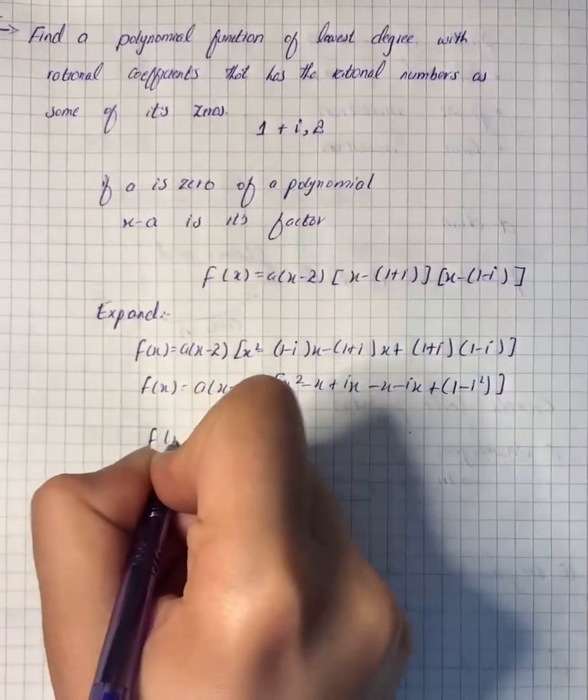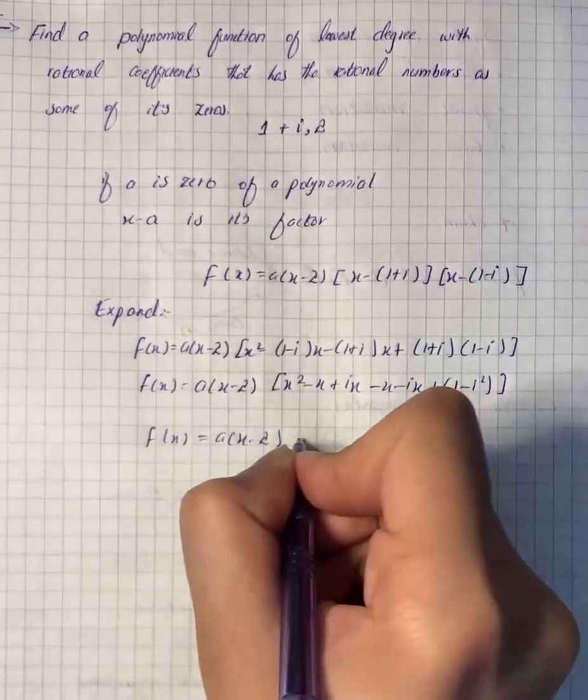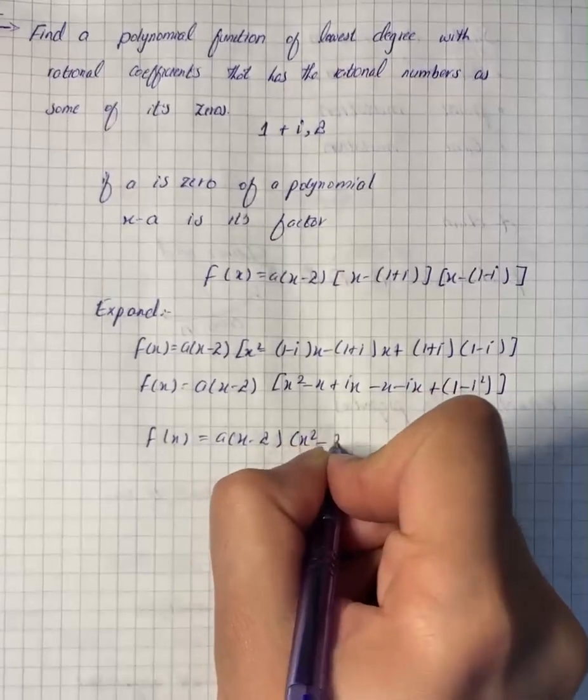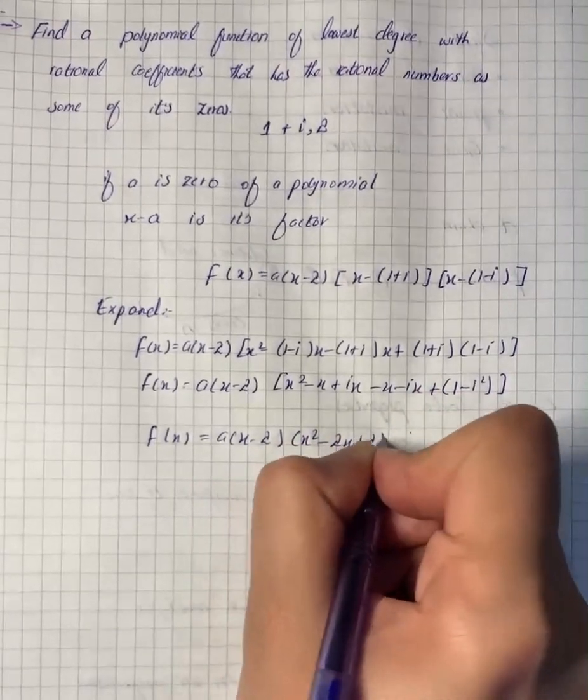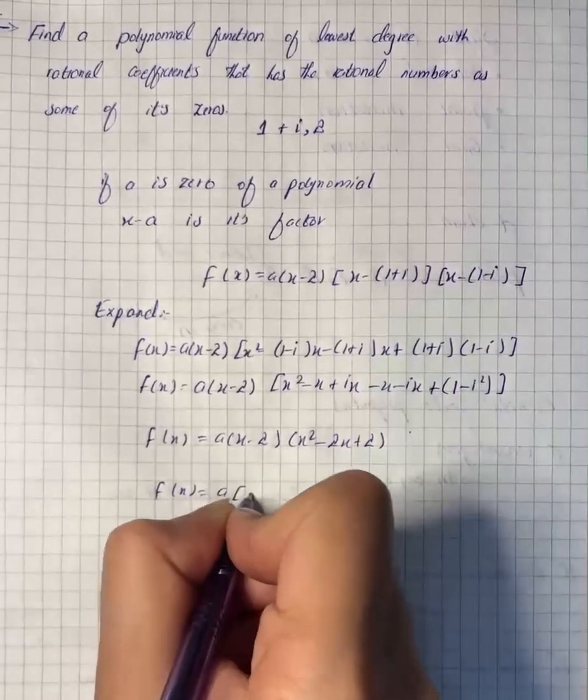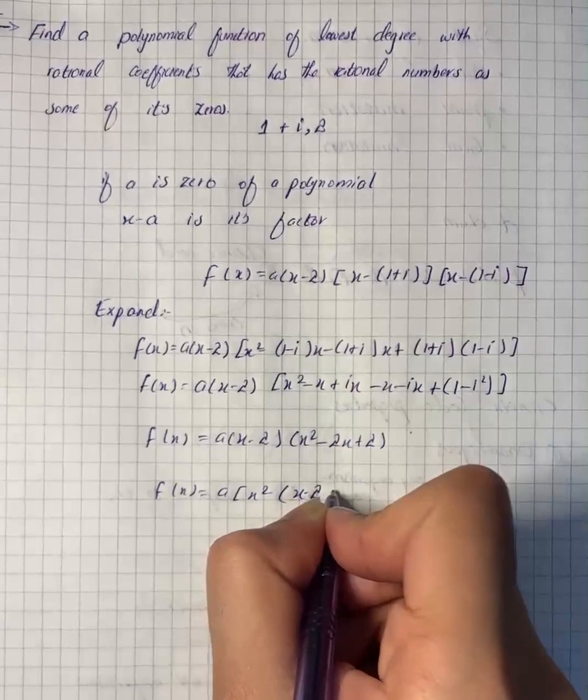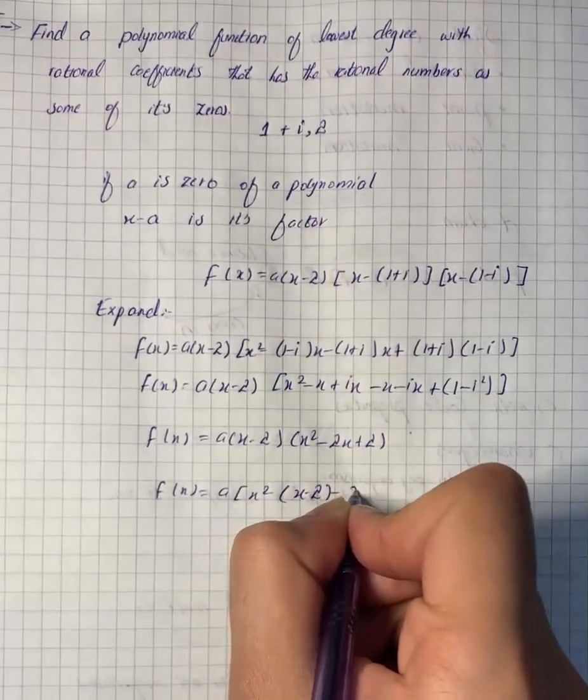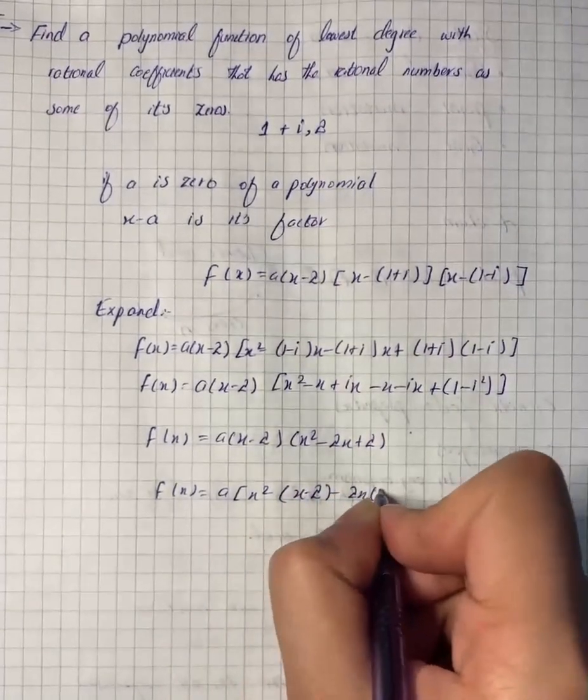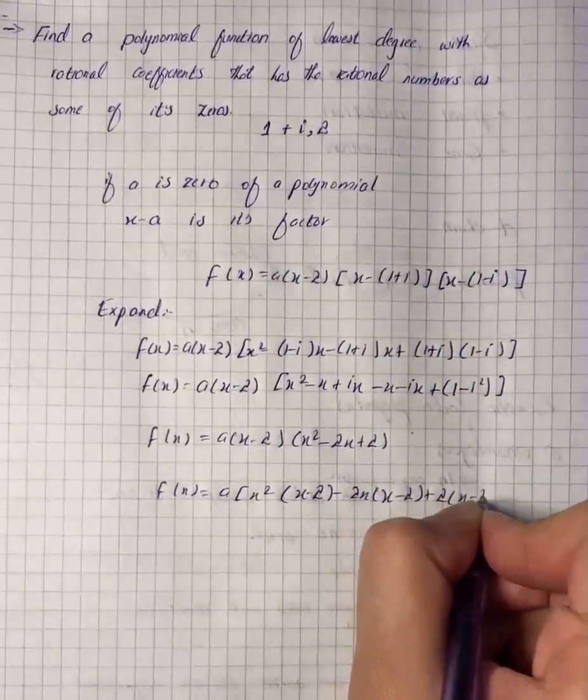Further expansion gives us a into x minus 2 into x squared minus 2x plus 2. So it becomes a into x squared into (x minus 2) minus 2x into (x minus 2) plus 2 into (x minus 2).